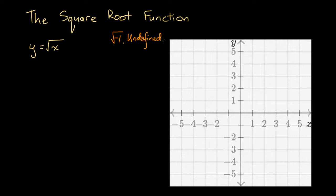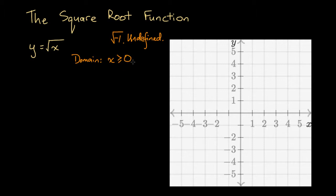If we ever encounter the square root of minus anything — the square root of some negative number — that is always undefined for our purposes. This means the domain will exclude all negative x values, since substituting a negative x value won't yield any real y value back. All positive x values will be in the domain, and the square root of 0 equals 0, so 0 is included as well. The domain for this function is x greater than or equal to 0.